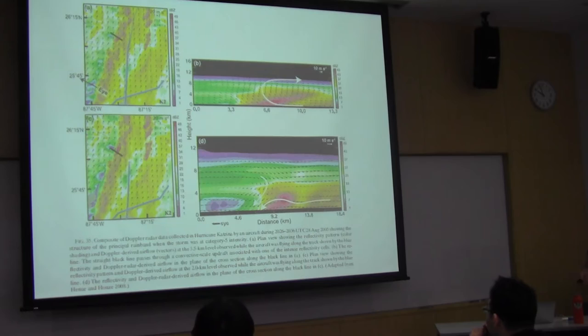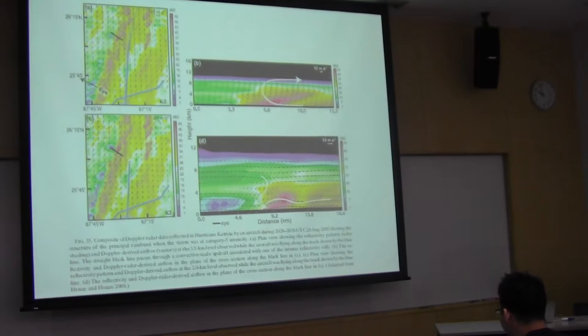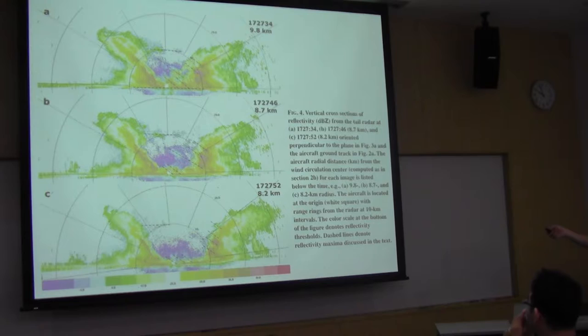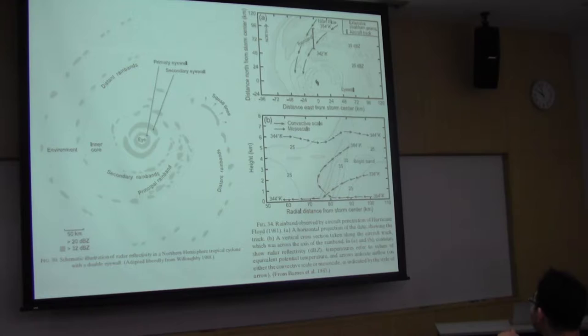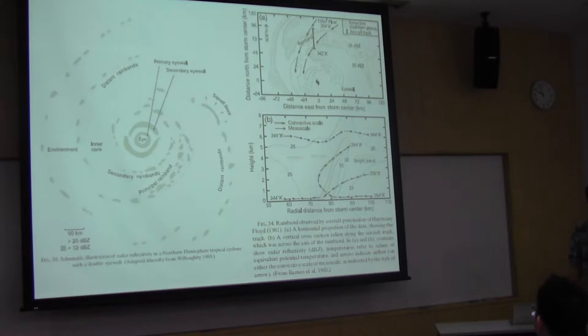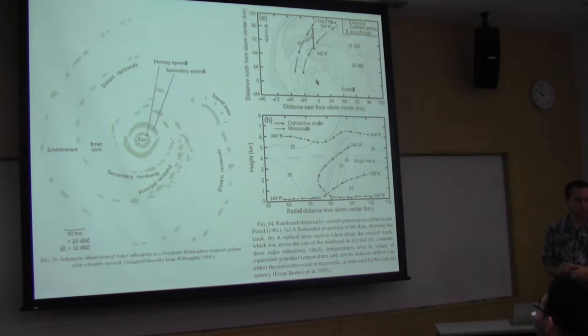Could you go back three slides? This one. In this slide, this is primary eyewall and secondary eye? No, principal rain band and secondary rain band. What distinguishes the flow?